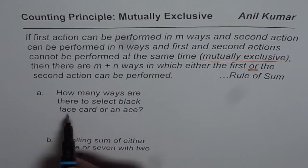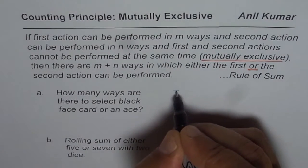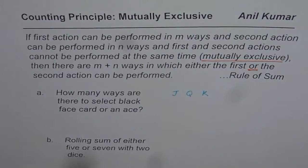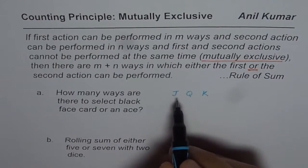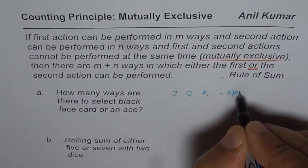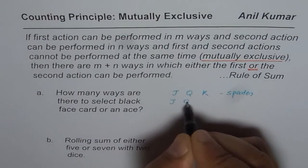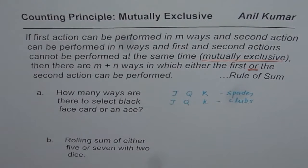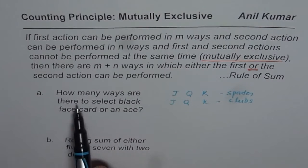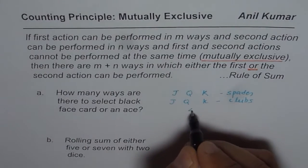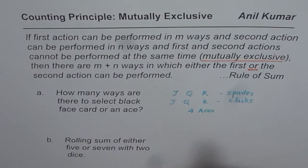Let's solve the first one. The face cards are jack, queen, and king. When we say how many ways are there to select black face cards, we could have jack, king, and queen of spades, and we could also have jack, queen, and king of clubs. Both are the suits with black faces. So there are six black face cards. And how many aces are there? There are four aces.